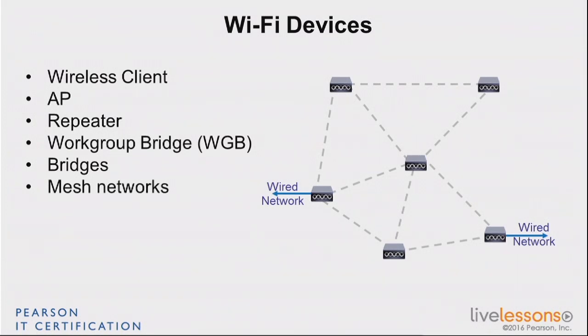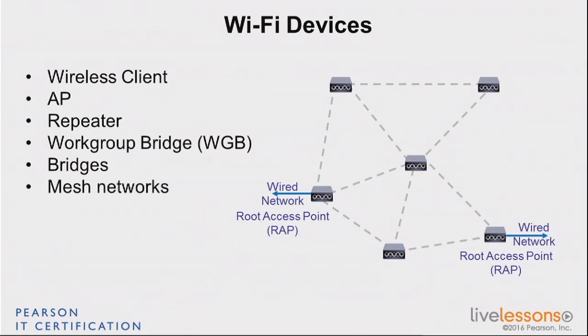The role is set: access points that have a wired connection and must use it are called RAP — root access points. All the others that may or may not have this wired connection and are free to use the radio are called mesh access points, or MAPs.